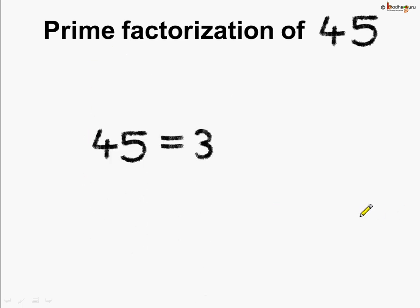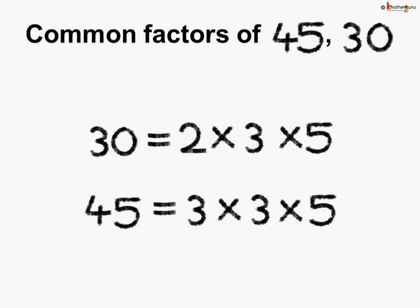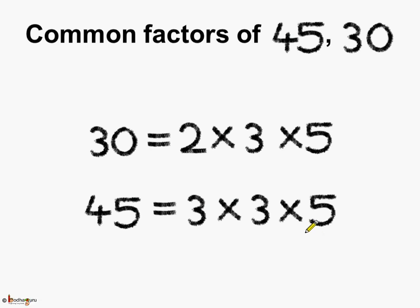45 is equal to 3 multiplied by 3 multiplied by 5. Now let us find the common factors of 45 and 30. 30 is equal to 2 multiplied by 3 multiplied by 5, and 45 is equal to 3 multiplied by 3 multiplied by 5, which we found using the prime factorization method. Now what are the common factors here? They are 3 and 5.